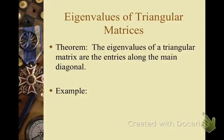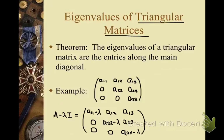In the next lecture we'll talk about finding eigenvalues of any n by n matrix, but for now we'll look at triangular matrices because their eigenvalues are very easy to find. Consider a general 3 by 3 upper triangular matrix — triangular means all entries above or below the diagonal are zeros. We form A minus lambda I by subtracting lambda from the diagonal elements.